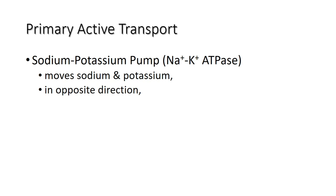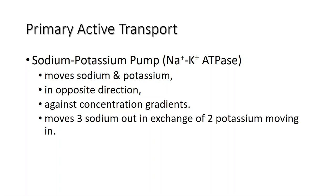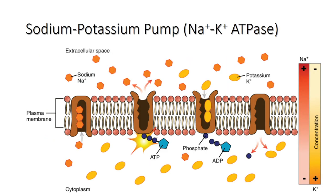In a single cycle of the pump, three sodium ions are extruded from the cell and two potassium ions are imported into the cell. The sodium-potassium pump exists in two forms depending upon its orientation to the interior or exterior of the cell and its affinity for either sodium or potassium ions.